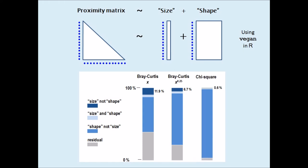Finally, when using a proximity measure such as the chi-square that operates on relative abundances, the part due to size practically vanishes as expected, so that differences between the samples are just differences in their shapes.